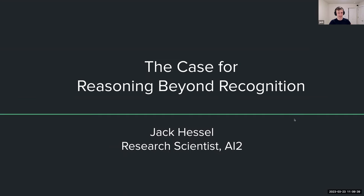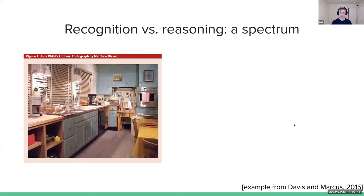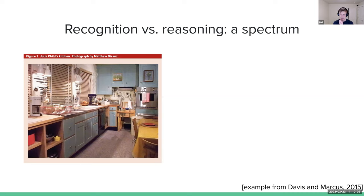The best way to explain what I mean is with an example from Davis and Marcus. There's an image that appears to be some sort of kitchen with appliances, and in the background you can see a workbench that's a little unusual. Alongside this image is the caption: 'This is Julia Child's kitchen.' I didn't know who Julia Child really was prior to seeing this example — it turns out she's a very famous chef with cookbooks and TV appearances, and apparently this is her kitchen.